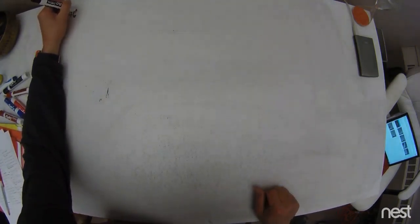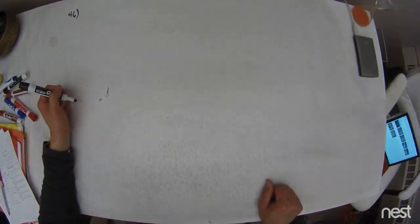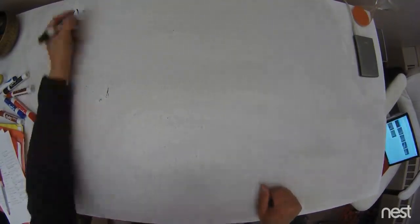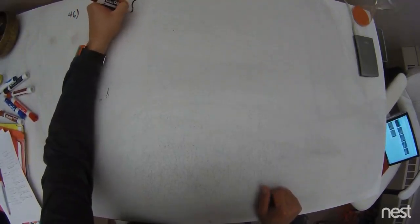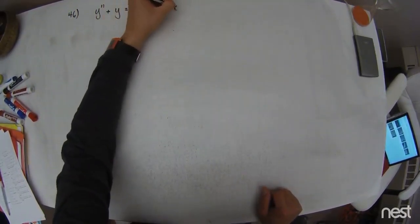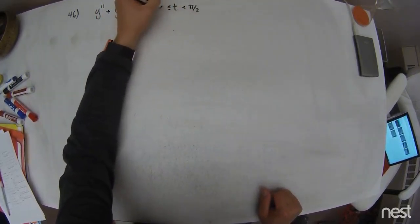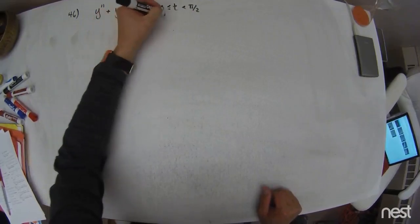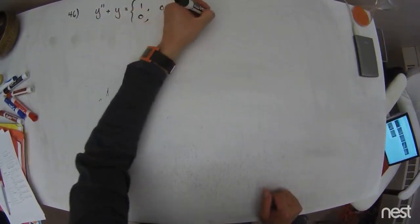All right, so after the lovely 45, a little intense there, we're going to do 46. This is y double prime plus y is equal to 1, where t goes from pi over 2. There's an upper bound in 0, and then 0 for t greater than or equal to pi over 2.